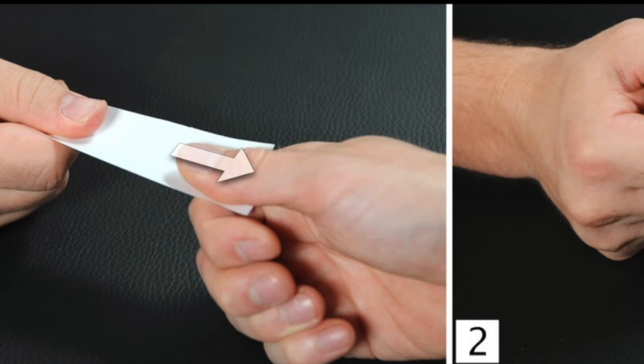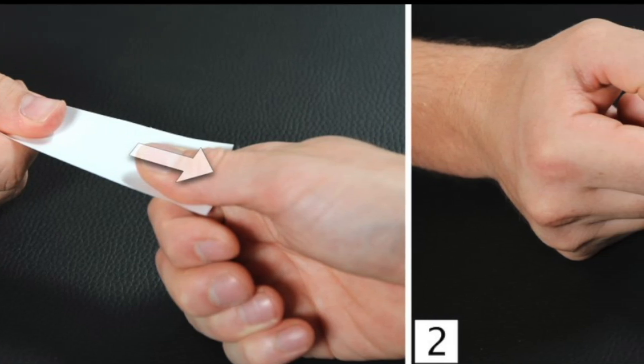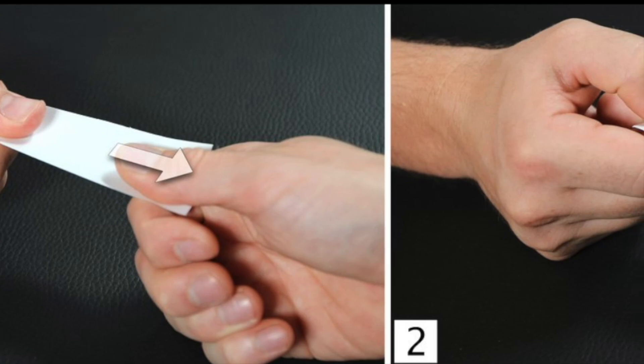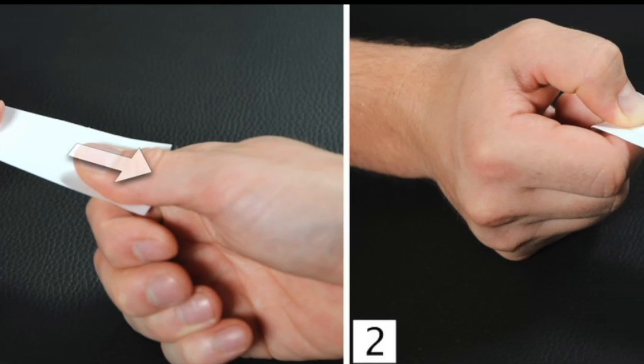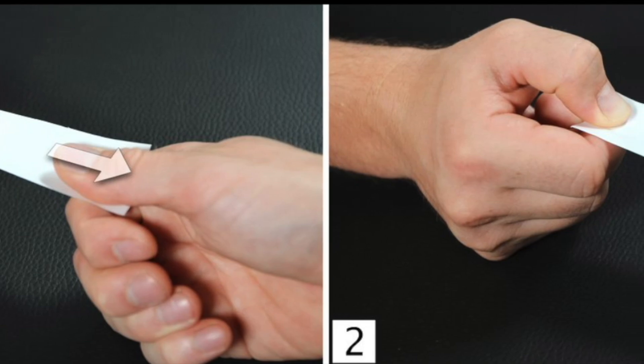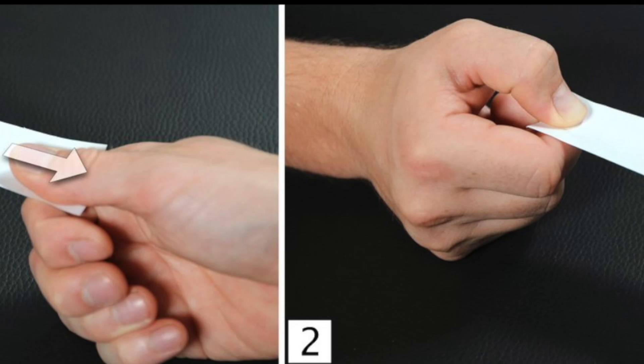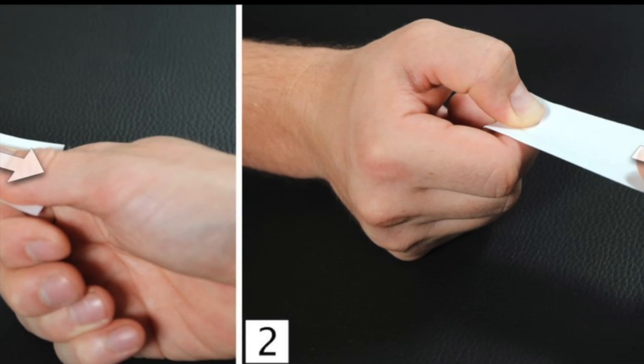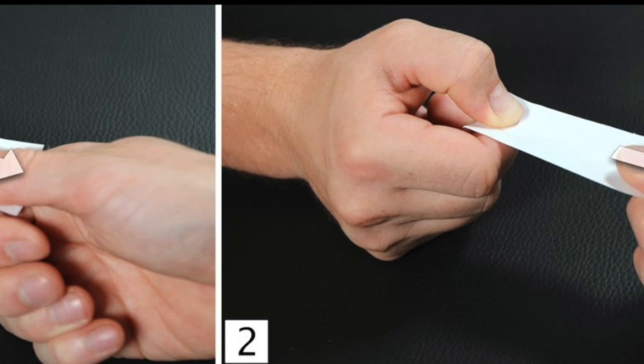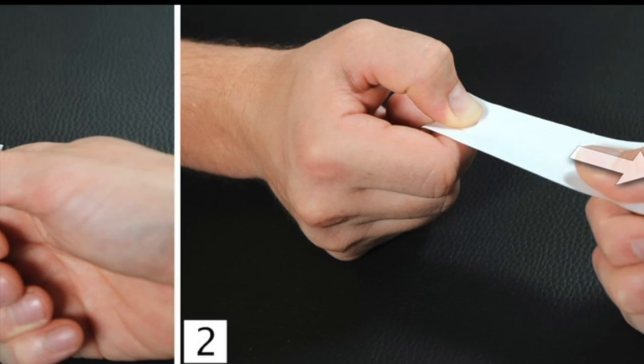With the weakness of the adductor pollicis, he will not be able to grasp the paper. So what he'll do to prevent the paper from slipping out is use his muscle called flexor pollicis brevis and flexor pollicis longus. Here you can see in the image how the person is trying to withhold the paper card by flexing the terminal IP joint.